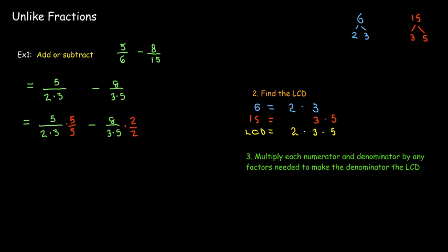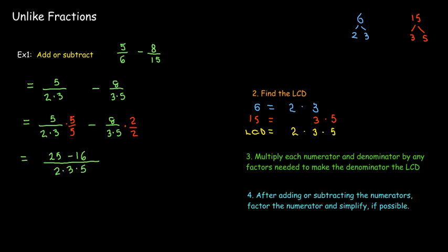And then I'll do the same thing in the second fraction. My denominator has 3 times 5. My LCD has 2 times 3 times 5. So I need to multiply top and bottom by 2. So that now the bottom is the LCD in factored form. And I'll leave that in factored form, but I will multiply out the top of each fraction and perform the subtraction. Now I have 25 minus 16, which is 9. And then I'll go ahead and factor that 9 to see if there are any forms of 1. And there is. So we'll go ahead and divide out that 3 over 3. That leaves me with 3 over 10.